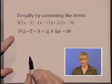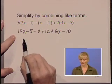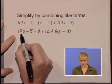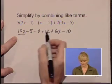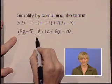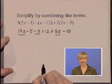We'll go through and underline like terms. Like terms have to have the same variable with the same exponent. We're looking for x terms. 10x, the negative x, and the 6x are like terms.